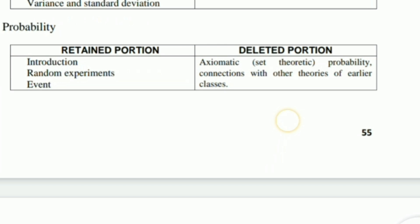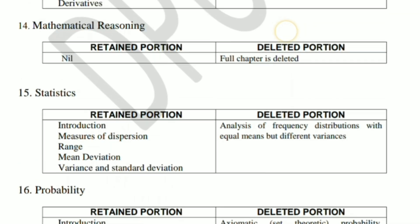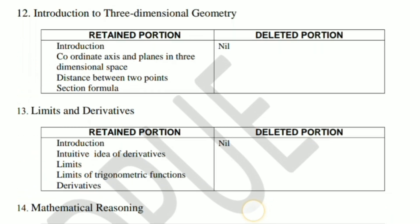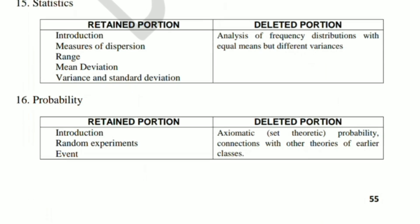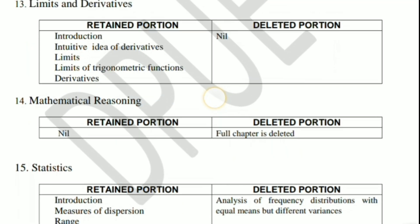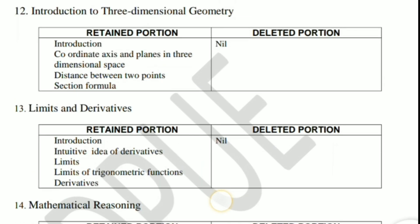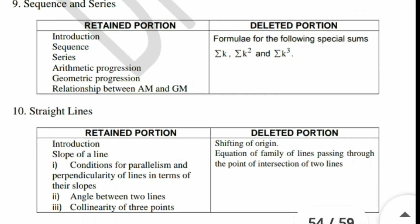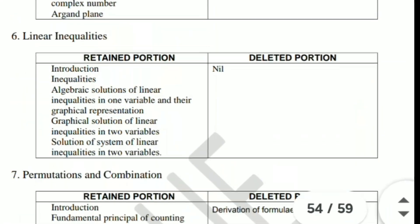In the last chapter, probability — the axiomatic approach to probability is deleted. The random experiment concept is also deleted. So all these concepts are deleted. Friends, this is the blueprint of deleted portions. The next video will be uploaded soon. Keep watching, thank you.